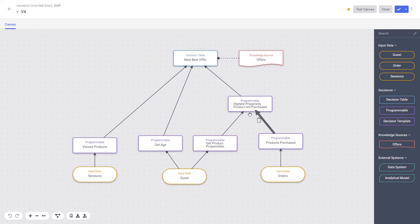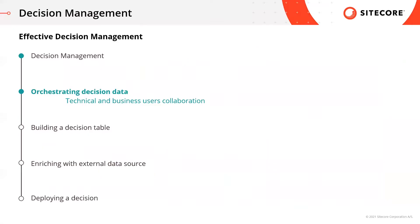We have another step that helps us determine what the customer has currently not purchased that they might purchase according to their predetermined propensities. The final step at the top is a decision table — we'll be looking at this in detail in the next part of the demonstration. Essentially, this is where we can start to define the rules for the information that we have collected. We've just seen how we can orchestrate data required for business decisions through a drag-and-drop interface, activating your company's unique first-party customer data to consistently deliver business decision outcomes for all channels.